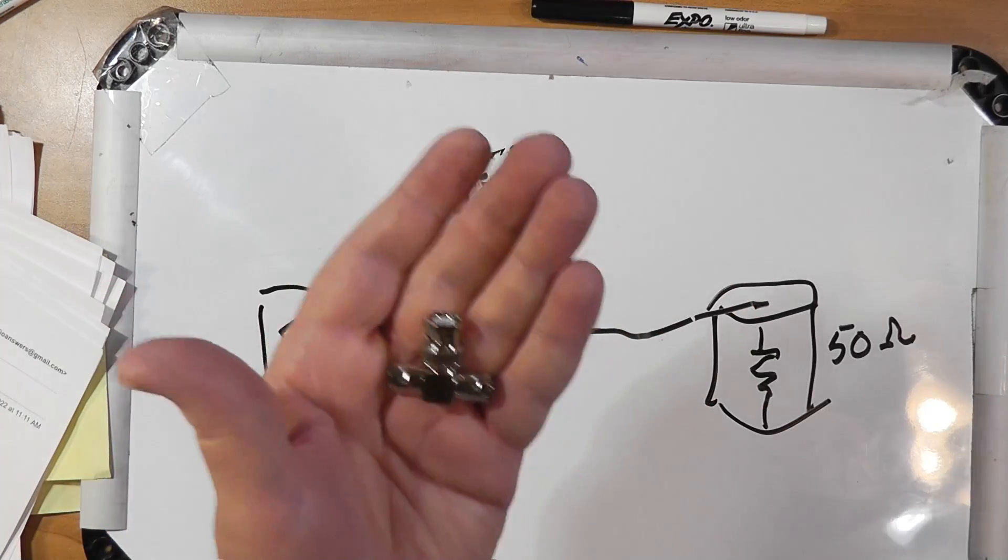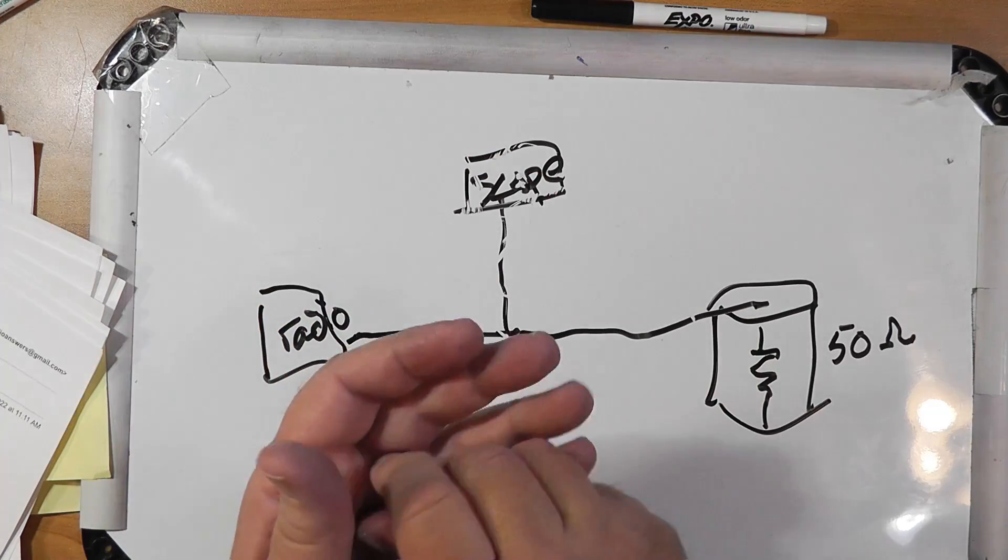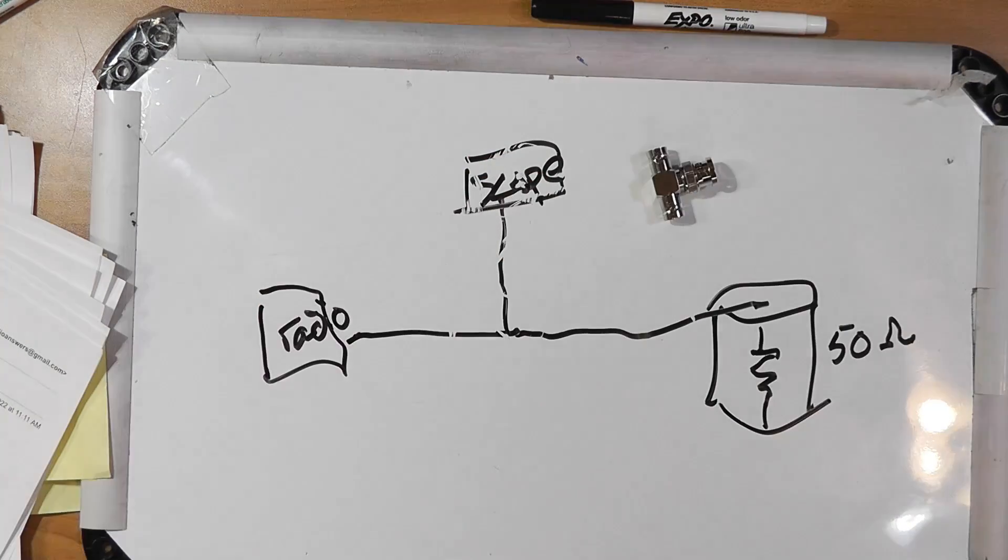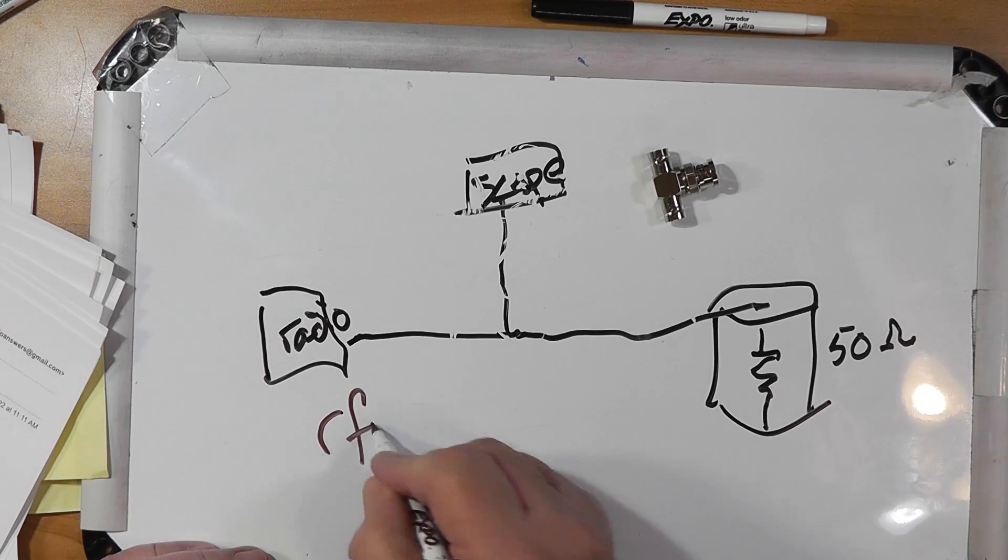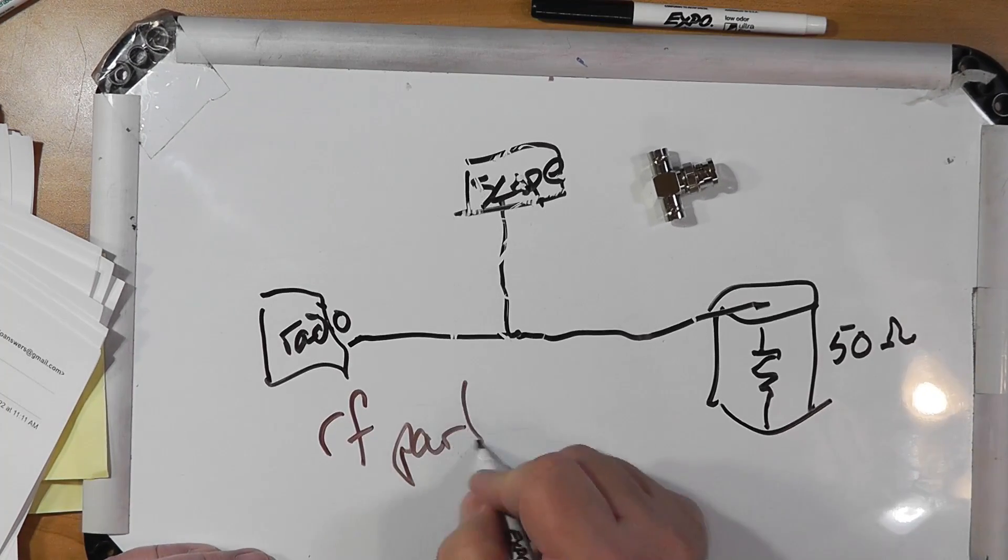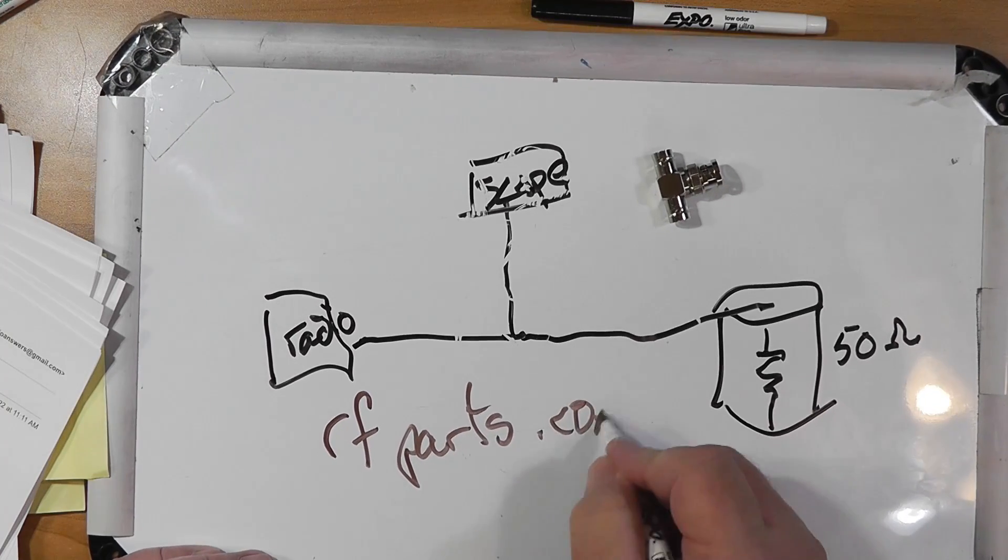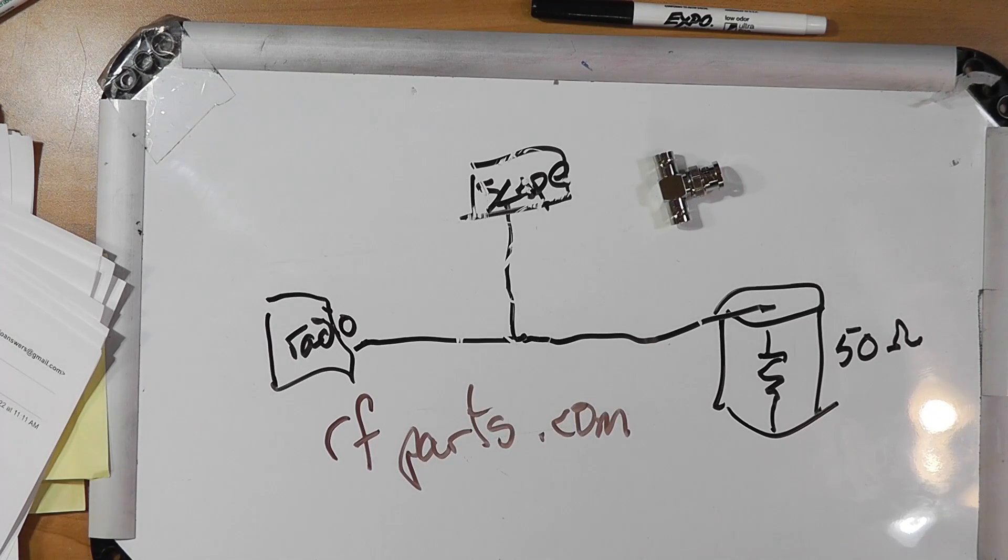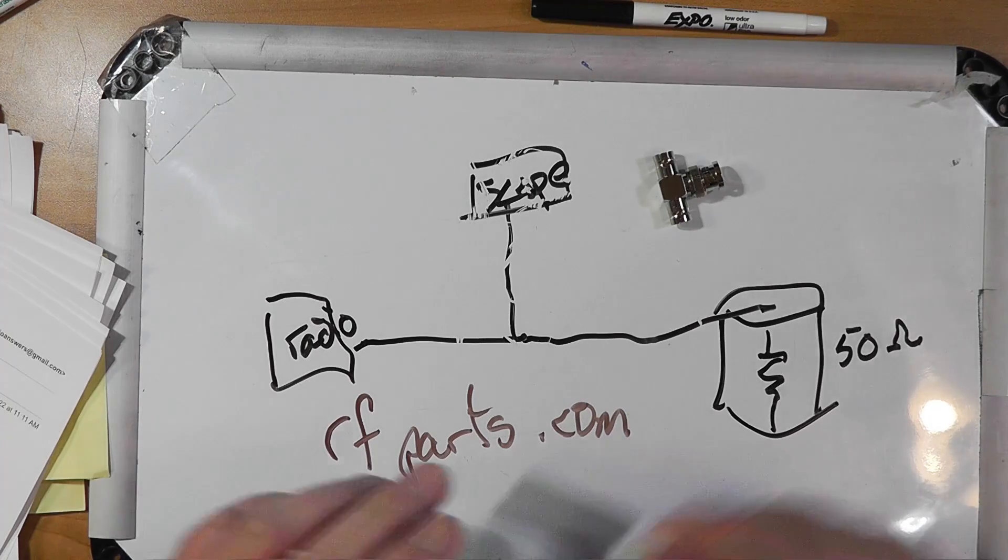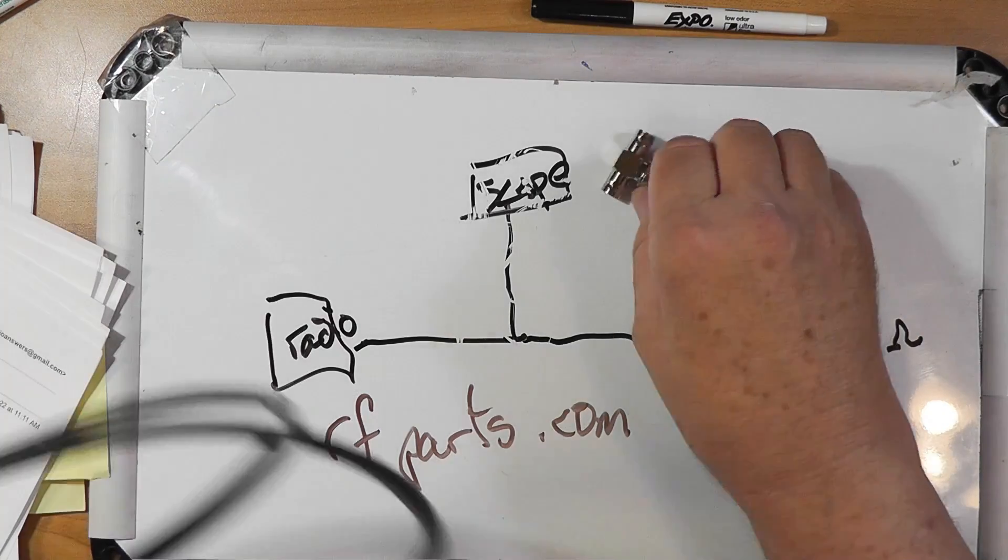These are cheap, easy to get. You can order them from something like RF Parts. Yes, they sure are. You can get them from RFParts.com. And they show up at a lot of ham fests. So you can get these at a ham fest.